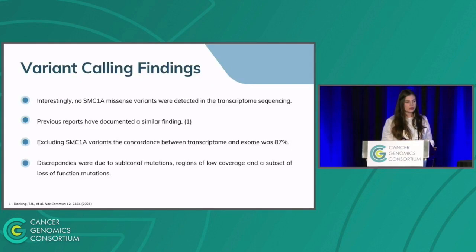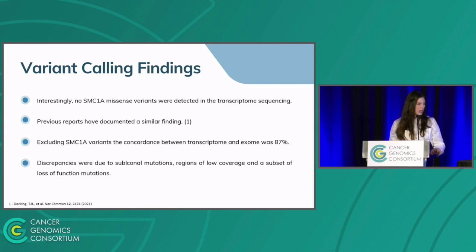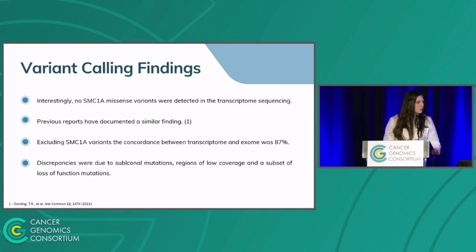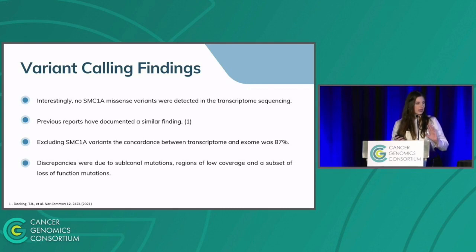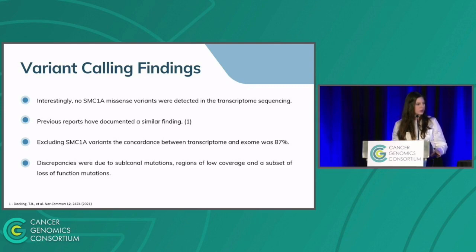Interestingly, no SMC1A missense variants were detected in the transcriptome sequencing. We had difficulty with this detection, though previous reports in the literature document similar findings. Excluding SMC1A variants, the concordance between transcriptome and exome in variant detection was 87%. The discrepancies were due to subclonal mutations, regions of low coverage, and a subset of loss-of-function mutations.